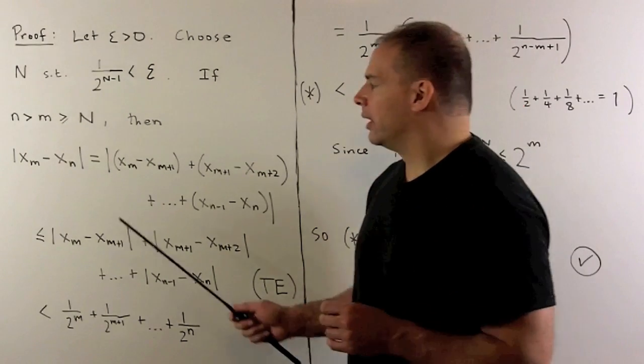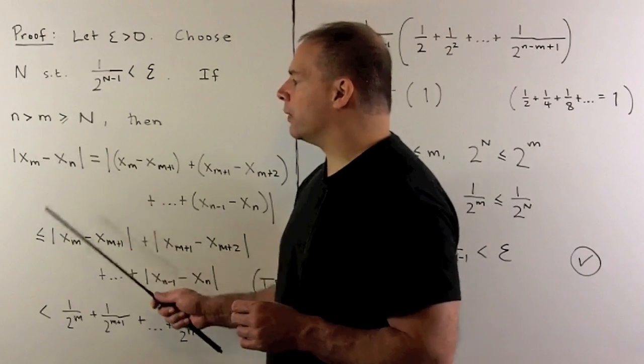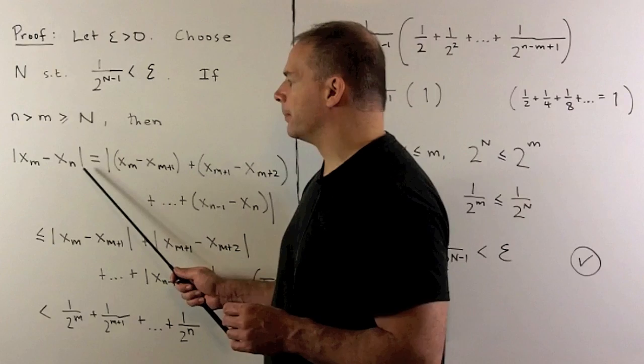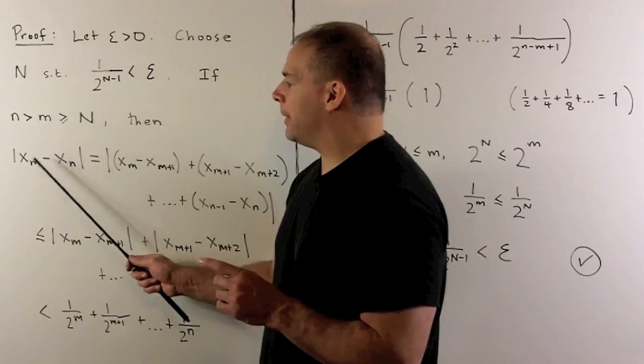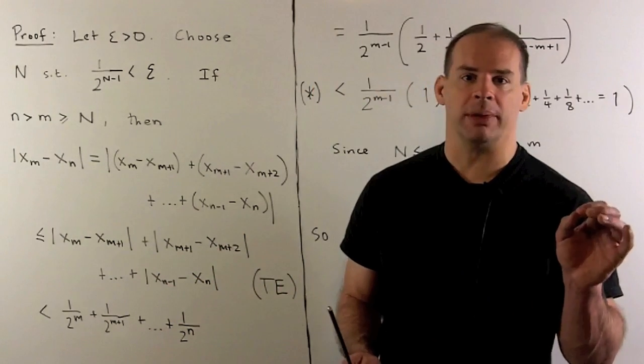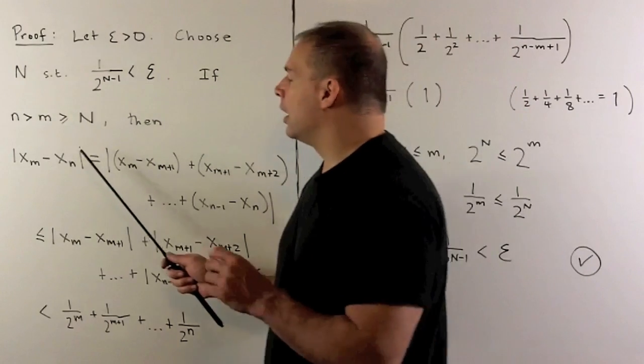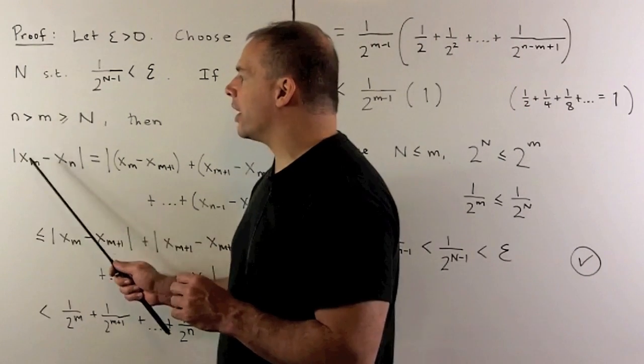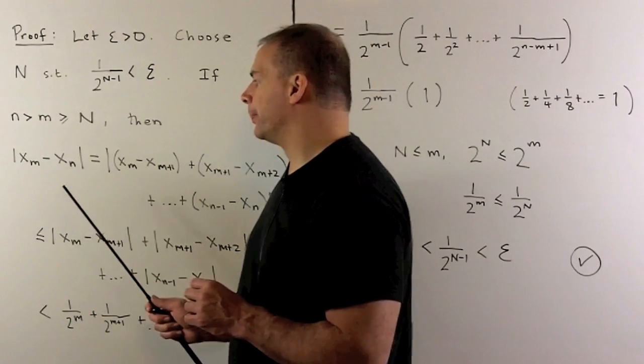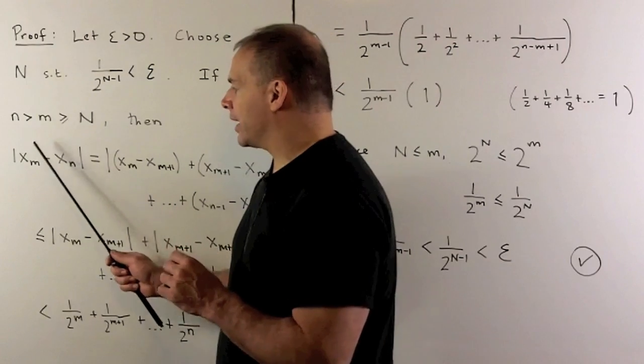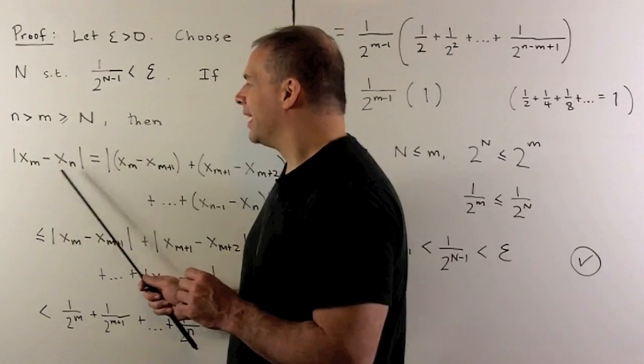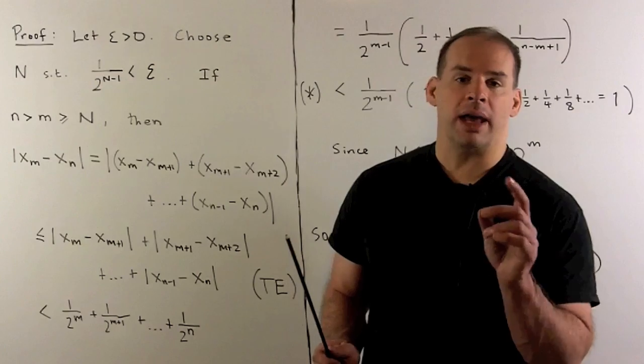Our work starts with this term, the absolute value of x_m - x_n. m and n are going to be greater than or equal to some capital N to be determined later. I'm going to assume, since m and n are arbitrary, that n is greater than m. That's going to let me write x_m - x_n as a telescoping sum.